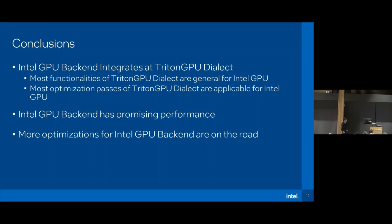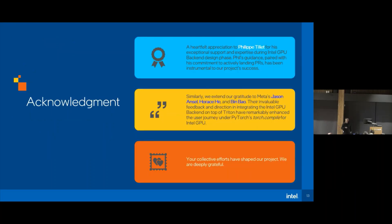In summary, the Intel GPU backend integrates the Triton GPU dialect, and most of the optimization and codegen passes are reusable for the Intel GPU backend. We have a clear line of sight to achieving promising performance, and more optimizations for Intel GPU are on the road. I also want to express my gratitude and thanks to Phil, Jesse, and Horace for their valuable suggestions on supporting third-party backends and for helping enable Intel GPU support in torch.compile.